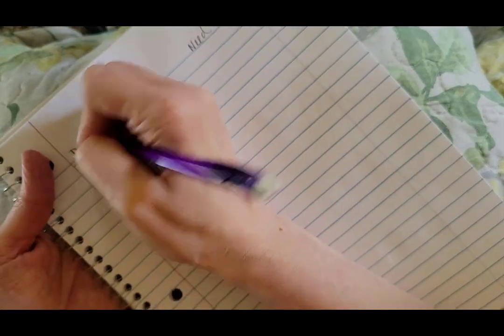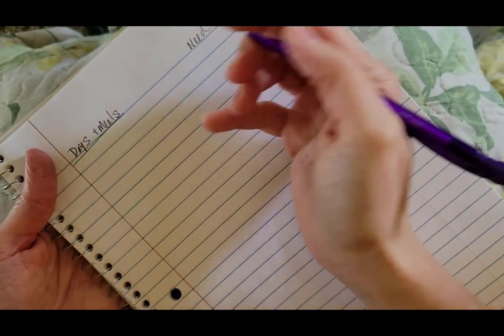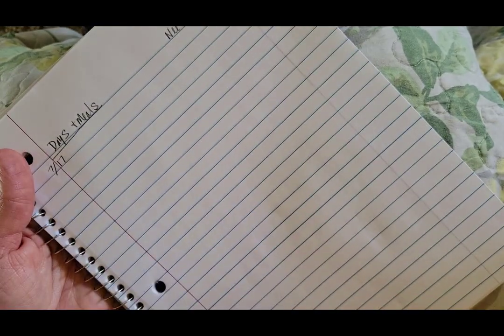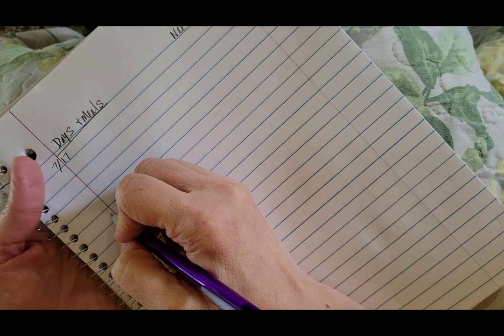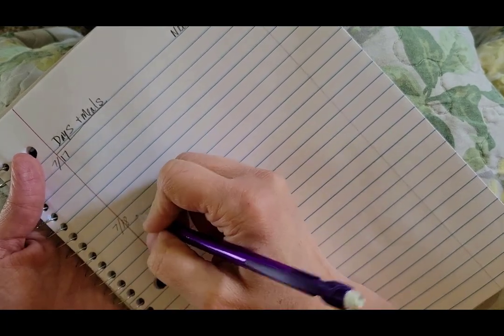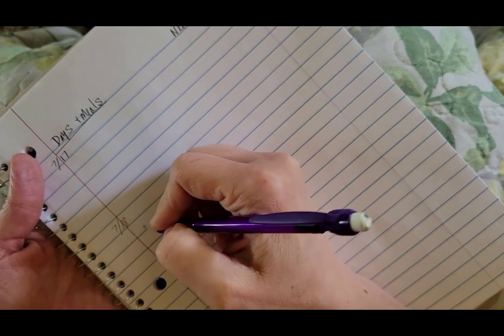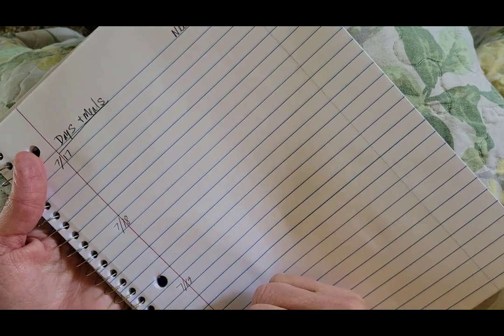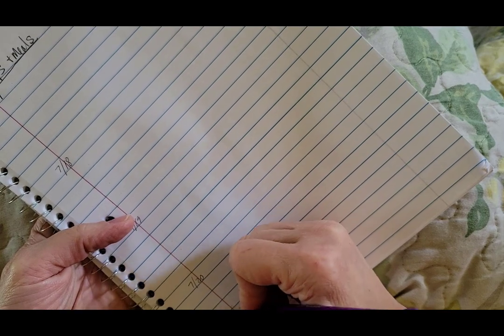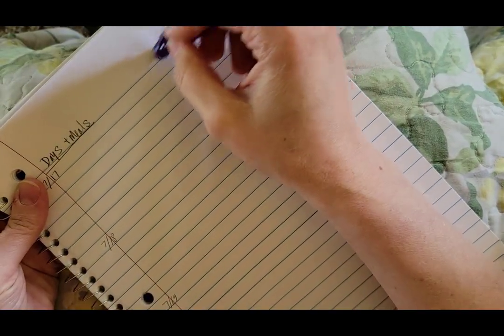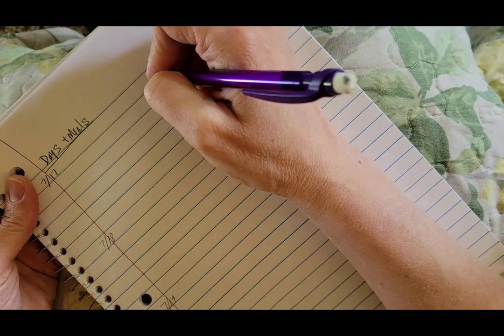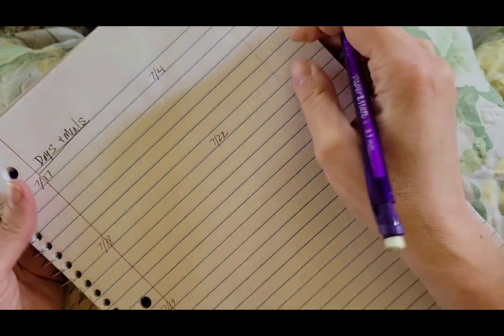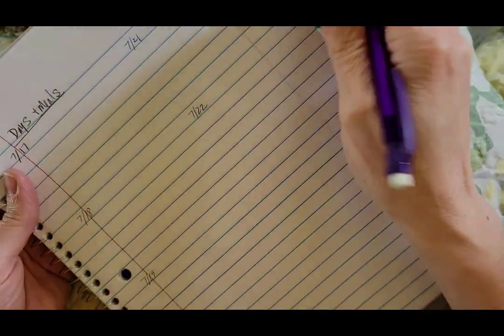I'm going to be going camping from July 17th. So I'll write 7/17, then 7/18, 7/19, 7/20. I think we're staying for quite a while, so I'll continue on: 7/21 and 7/22. I'll keep six spaces for each day to list meals.